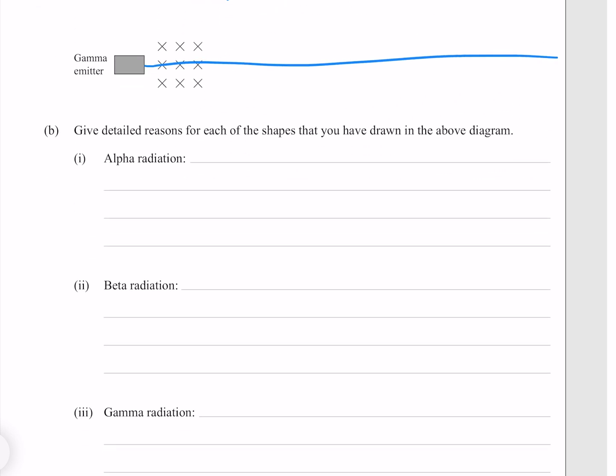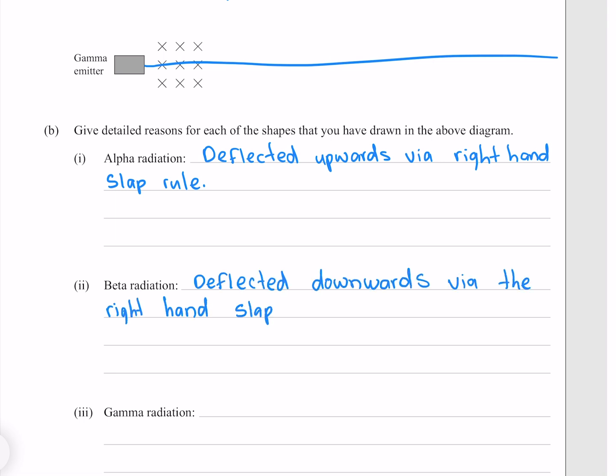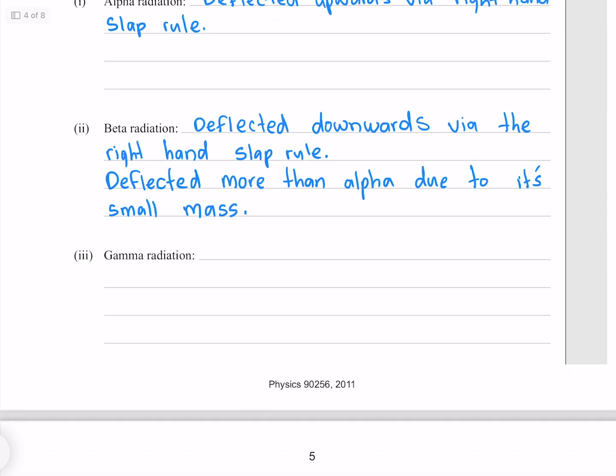Give detailed reasons for each of the shapes that you have drawn in the above diagram. We know that alpha radiation is deflected upwards via the right hand slap rule. We also know that beta radiation is deflected downwards via the right hand slap rule, and is deflected more than alpha due to its small mass. Gamma radiation is unaffected, as it has no charge.